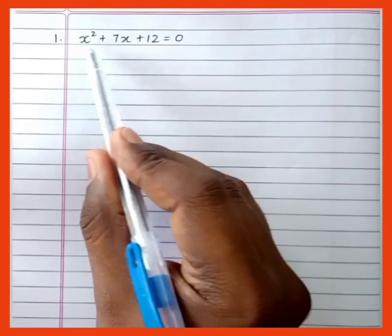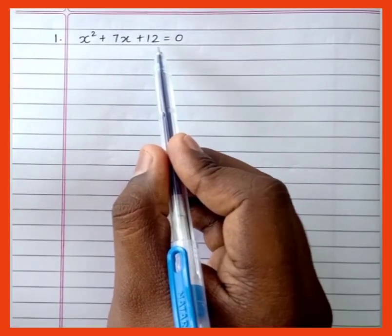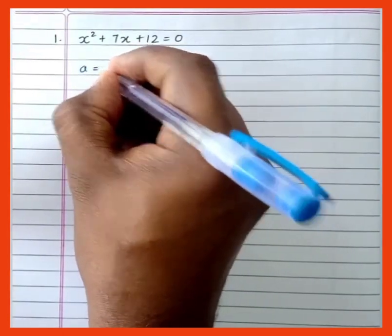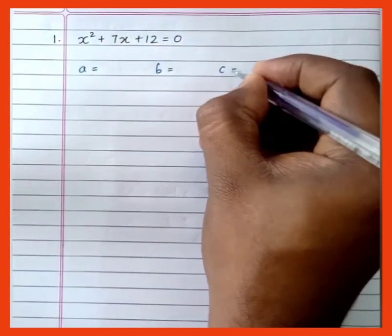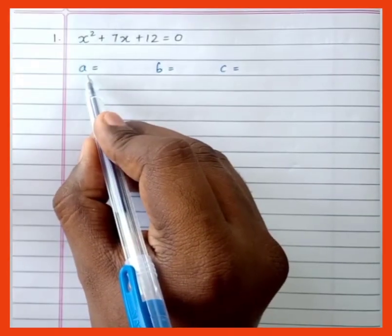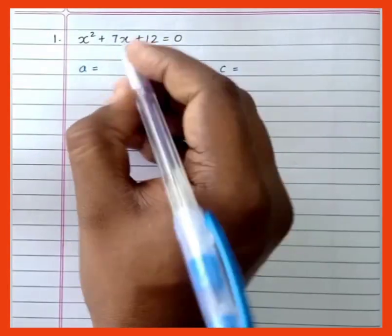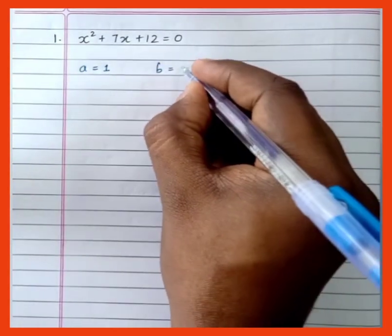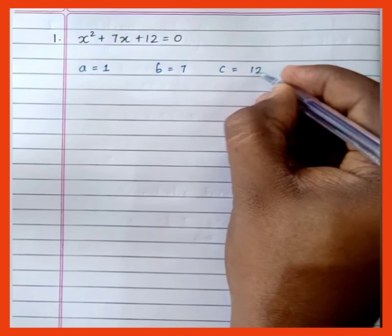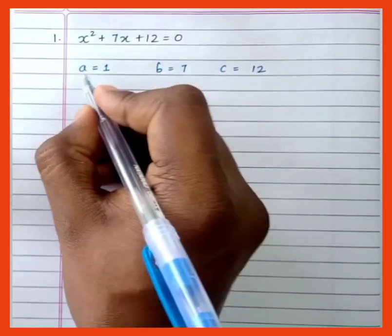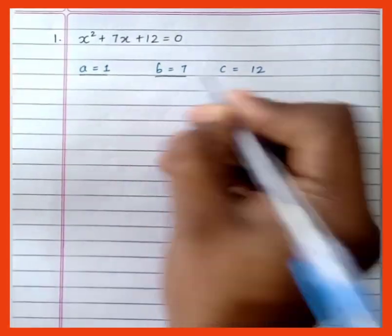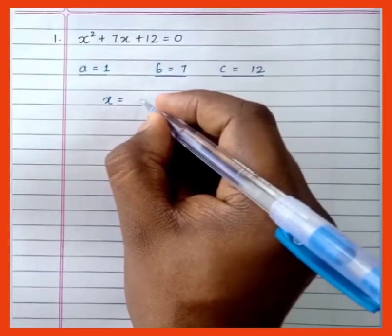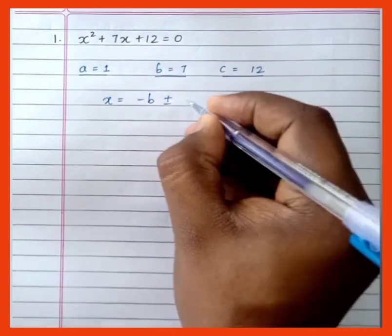Now we'll solve a few examples. The first question is x² + 7x + 12 = 0. The first step is to identify the coefficients a, b, and c. The coefficient of x² is a = 1, the coefficient of x is b = 7, and the constant is c = 12.